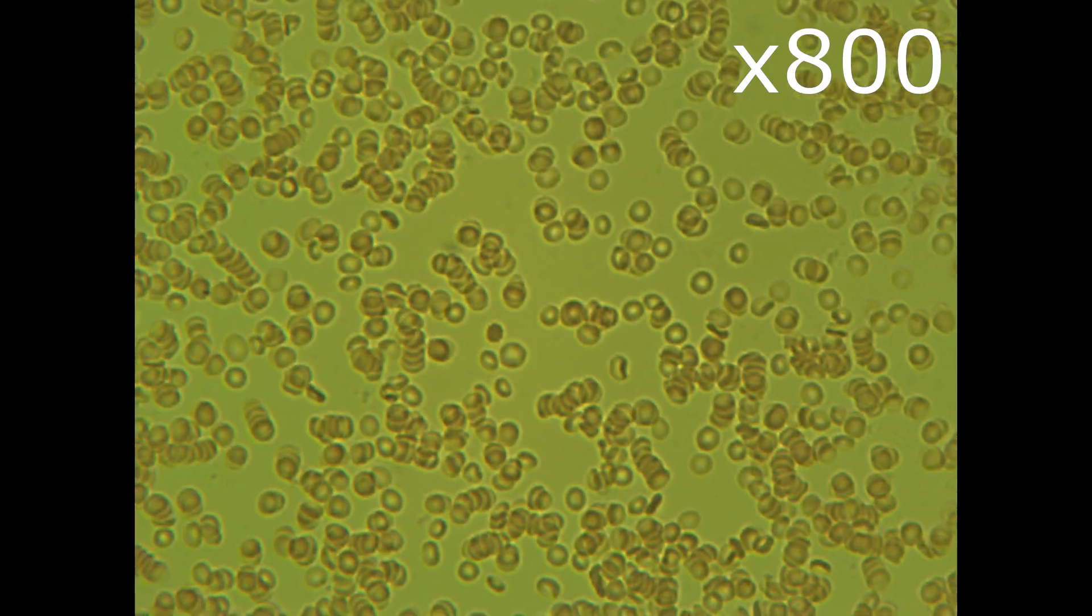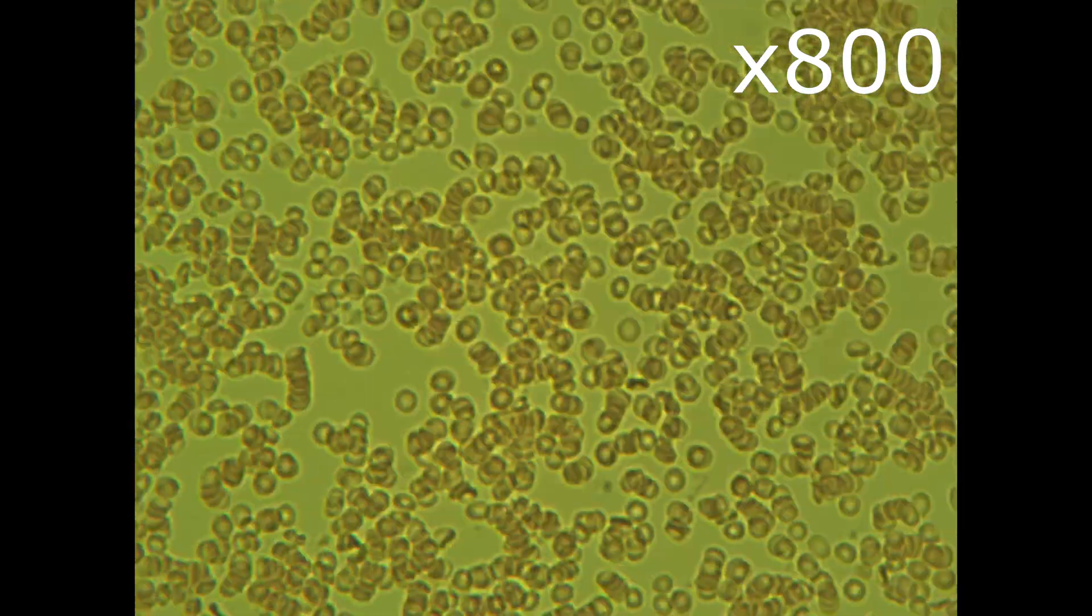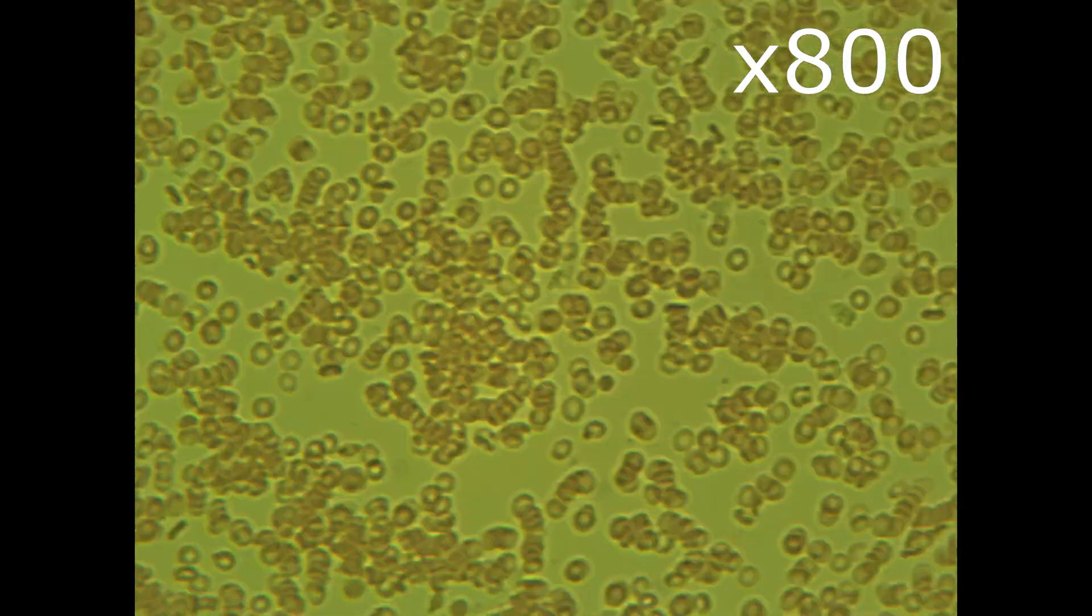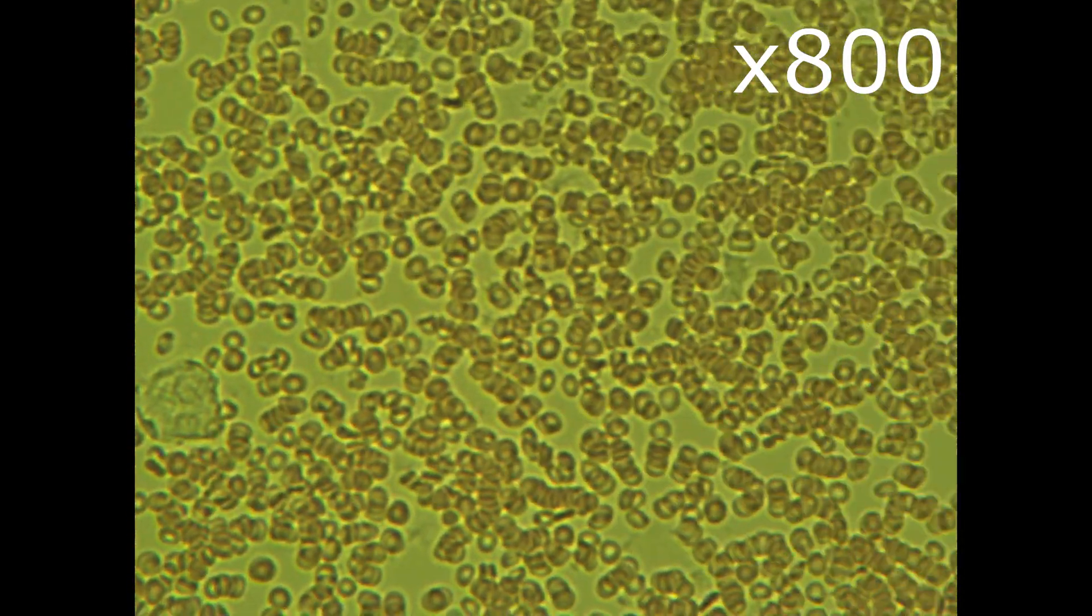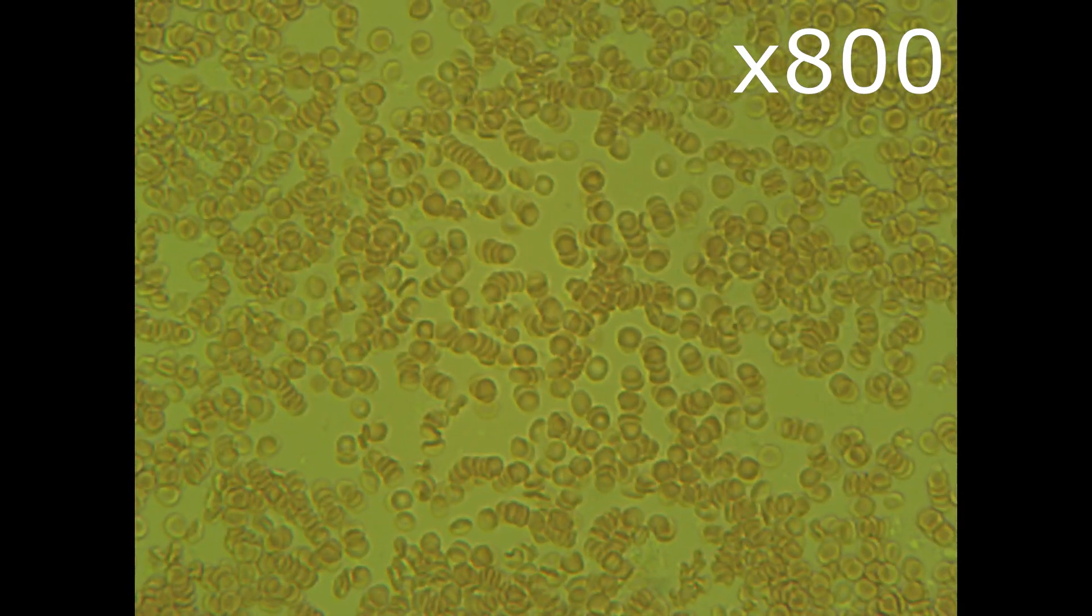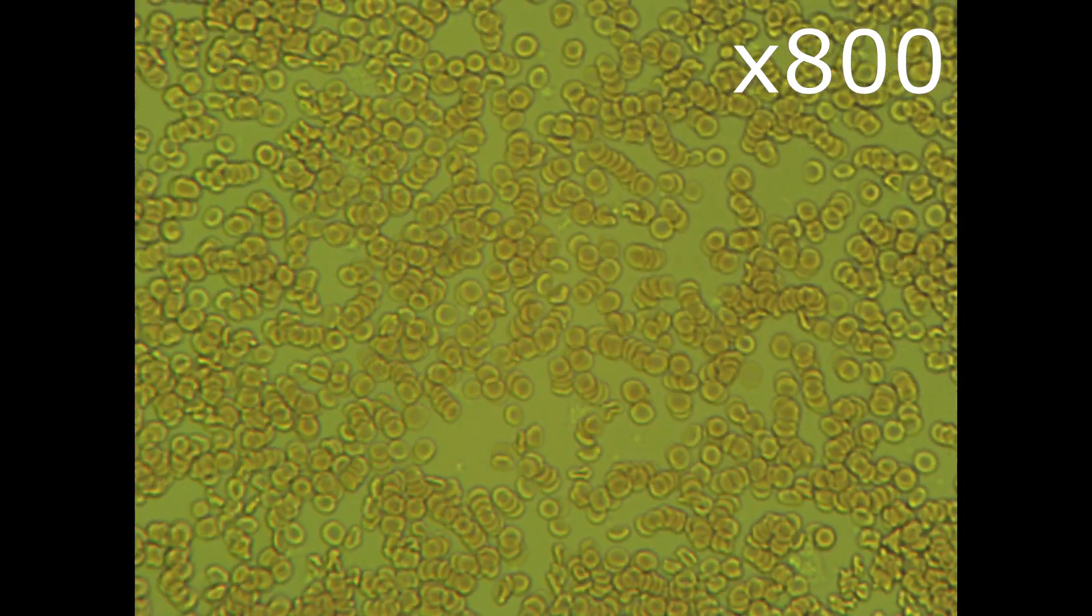Let's have a closer look, zooming to 800. 800 gives an impression that there are many more single erythrocytes than it was before. It is also noticeable that the length of the coin stack becomes slightly shorter.